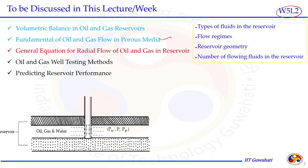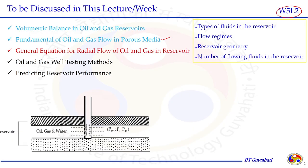In that lecture we discussed the types of fluid, flow regime, reservoir geometry, and number of fluids flowing in the reservoir at the same time. The combination of these 4 parameters may vary. There could be compressible fluid, incompressible, or slightly compressible fluid. For the flow regime it could be steady state, pseudo steady state, or unsteady state flow.